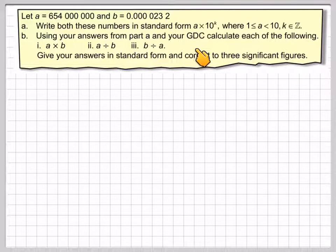Using your answers for part A and your GDC, calculate each of the following: A times B, A divided by B, B divided by A. Give your answers in standard form and correct to three significant figures.